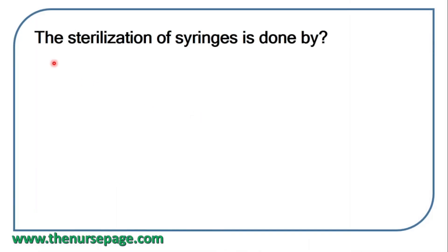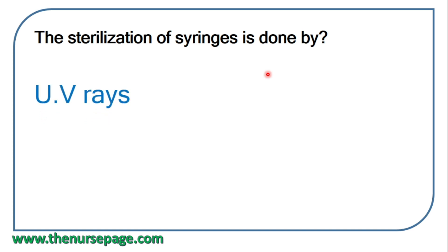Next question: sterilization of syringes is done by ultraviolet rays. Large-scale sterilization of syringes is done by ultraviolet rays, though nowadays all syringes are single-use only.